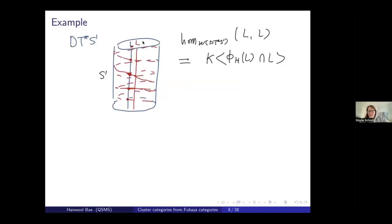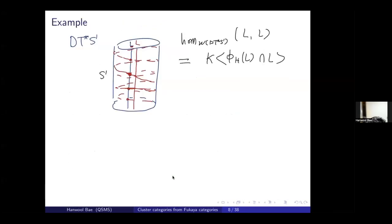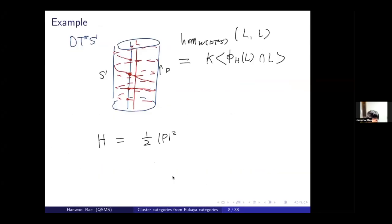There is a question: can we say what H is explicitly? Here, if we call the vertical fiber coordinate p, then H is given by p-squared — the quadratic Hamiltonian. That is what is meant by quadratic at infinity.